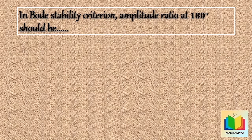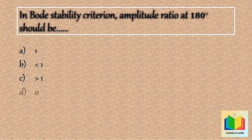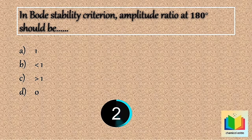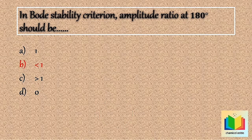Now next question — in Bode stability, the amplitude ratio at 180 degrees phase lag should be: Option A) 1, Option B) less than 1, Option C) greater than 1, Option D) 0. Your time starts now. 10, 9, 8, 7, 6, 5, 4, 3, 2, 1. Stop. Answer is option B: less than 1.